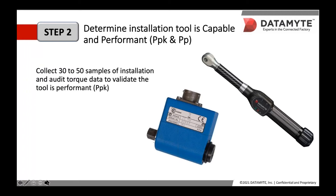Step two: determine the installation tool is capable of process performance — PPK or PP. We recommend collecting 30 to 50 samples of installation and torque data to validate tool performance. For each installation value, collect the residual value at the same point. For example, if 50 fasteners are installed, the same 50 are measured for residual torque. In this same exercise, there could be no variability introduced by material differences or changes to tool setting.